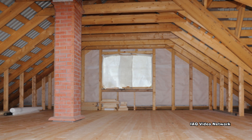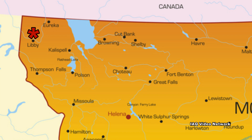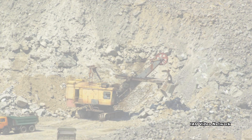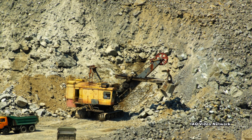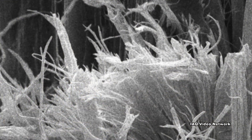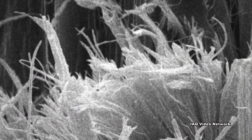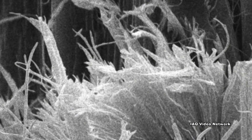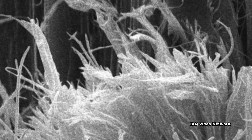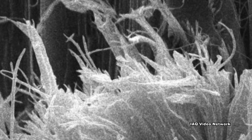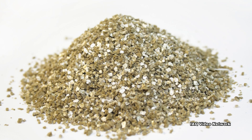For attics and walls, a mine near Libby, Montana was the source of over 70% of all vermiculite sold in the United States from 1919 to 1990. Unfortunately, there was also a deposit of asbestos at the mine, so the vermiculite from Libby was contaminated with asbestos.